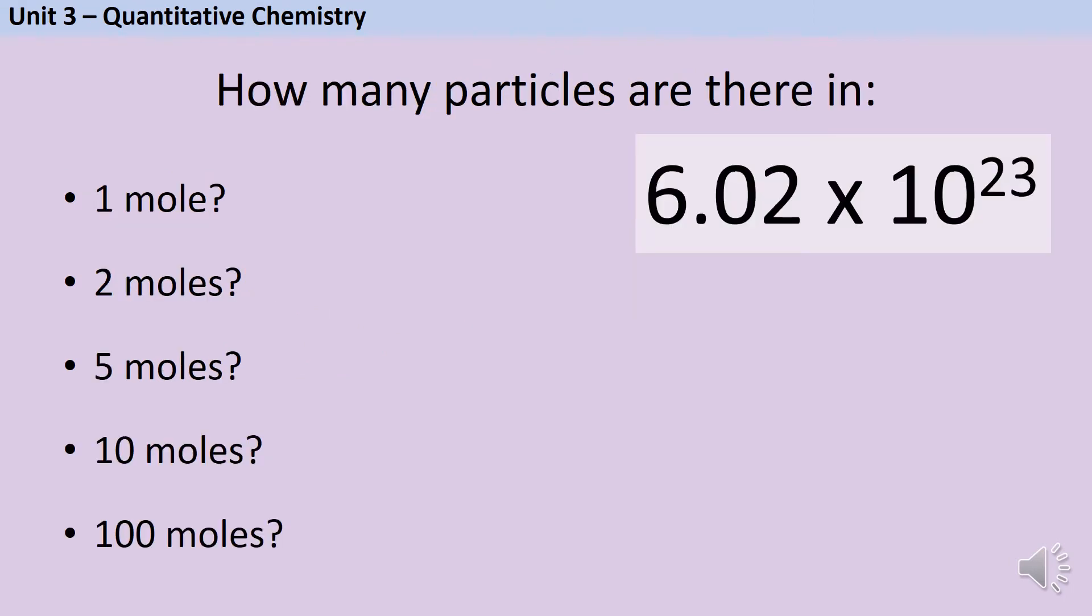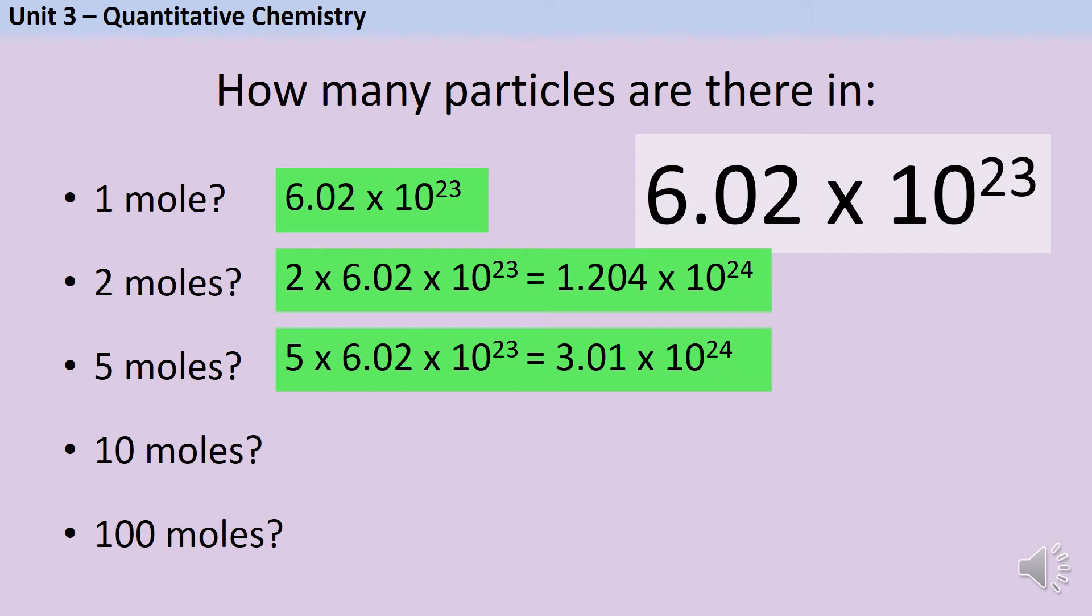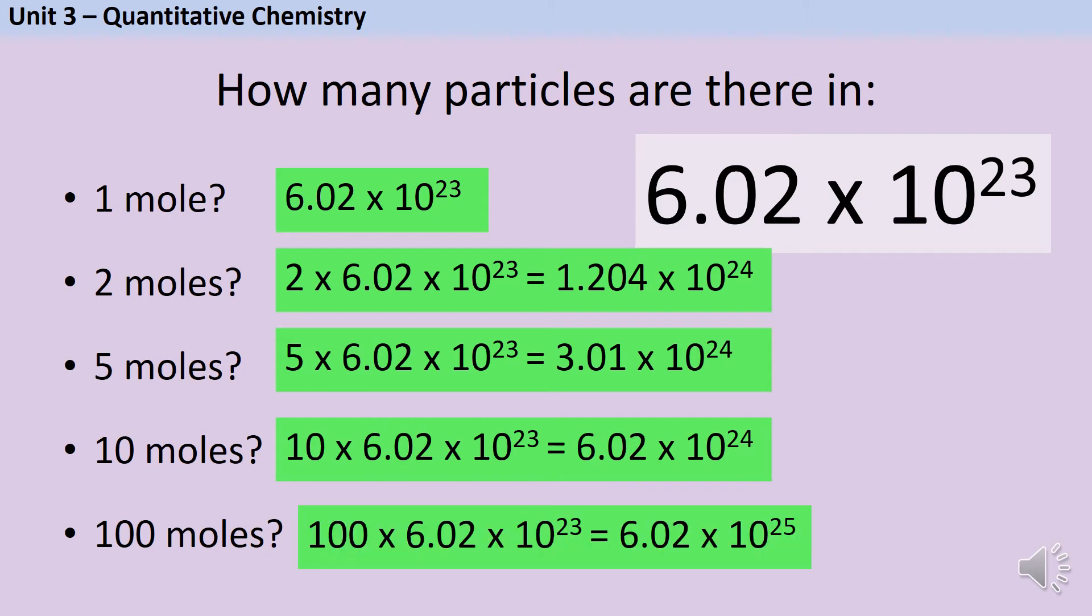If every mole contains 6.02 times 10 to the 23 particles, how many particles are there in each of these samples? So one mole is quite straightforward because one mole always contains 6.02 times 10 to the 23 particles. Two moles will contain double that number of particles, expressed in standard form that's 1.204 times 10 to the 24. Five moles would contain 3.01 times 10 to the 24 particles, 10 moles would contain 6.02 times 10 to the 24, and 100 moles would contain 6.02 times 10 to the 25 particles.